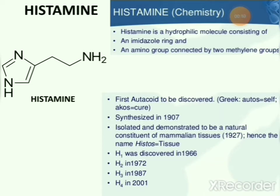Histamine was synthesized in 1907, and in 1927 it was isolated and demonstrated to be a natural constituent of mammalian tissues. Different histamine receptors were subsequently discovered: H1 in 1966, H2 in 1972, H3 in 1987, and H4 in 2001.